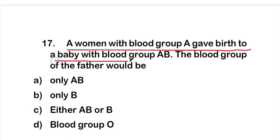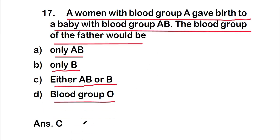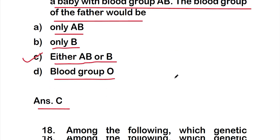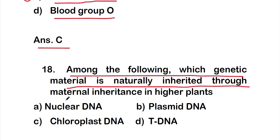Question seventeen: a woman with blood group A gave birth to a baby with blood group AB. The blood group of the father would be — option A: only AB, option B: only B, option C: either AB or B, or option D: blood group O. The right answer is option C, either AB or B.